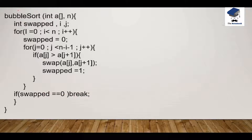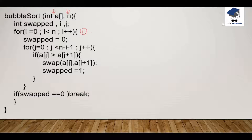Let's understand this algorithm. We have a function named Bubble Sort. We are passing two parameters: first is array and second is n, the size of the array. We are using three variables: swap, i, and j. We are also using a nested for loop. The first for loop is used to perform iteration. The second for loop is used to perform the check between the pair of elements.